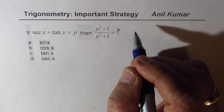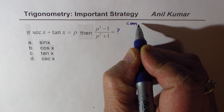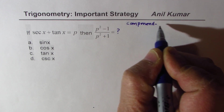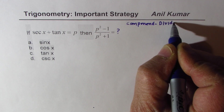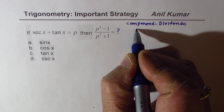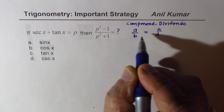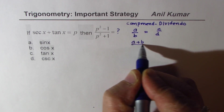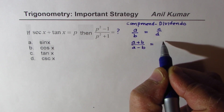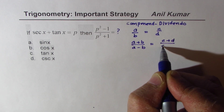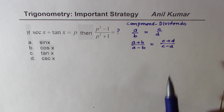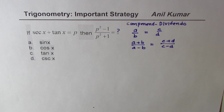The technique I'm talking about is called componendo dividendo. When we are given ratios — let's say a over b equals to c over d — then a plus b over a minus b is also equal to c plus d over c minus d. The proof for this I will attach at the end of the solution of the trigonometric question, so those of you who are interested can see the proof at the end of this video.